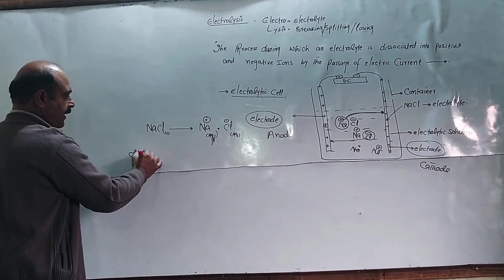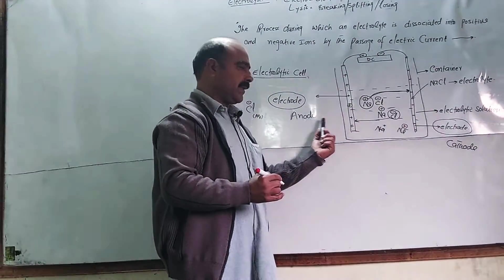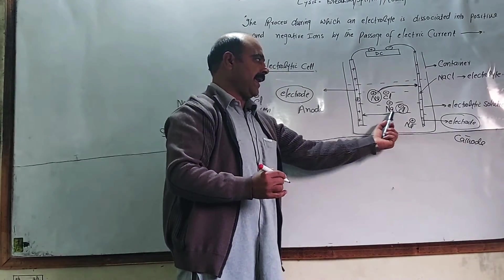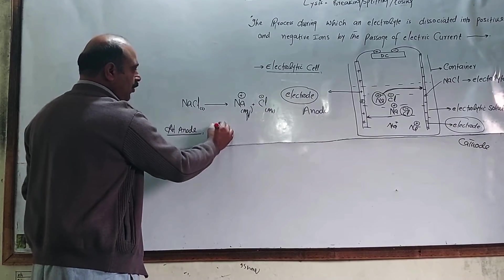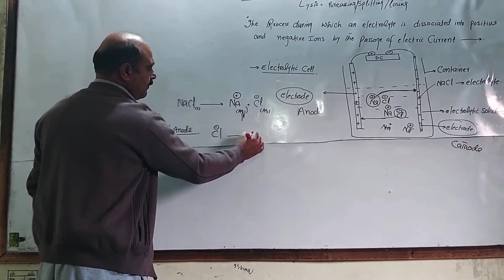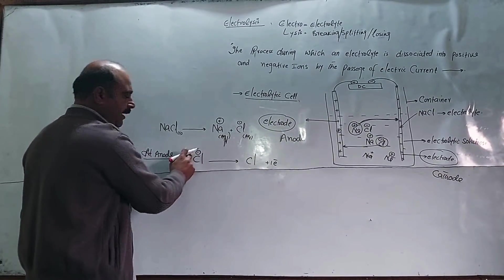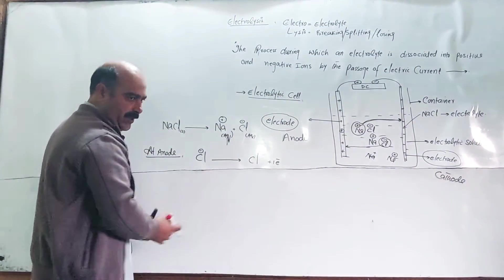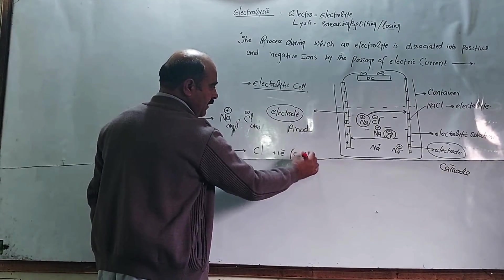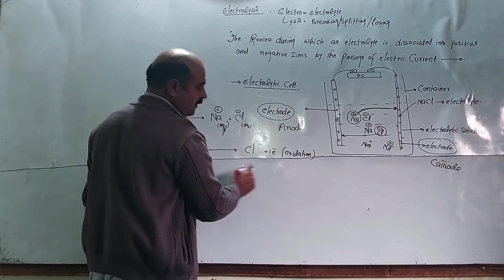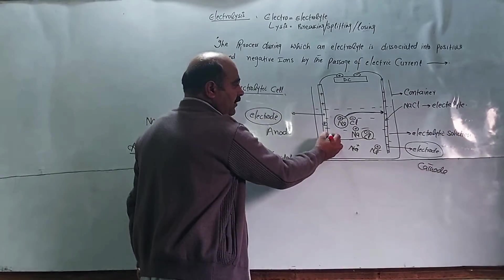At the anode, which is the positive plate, the chloride ions move toward it. The chloride ions lose electrons — loss of one electron, resulting in a minus one charge becoming neutral. Loss of electron is called oxidation.